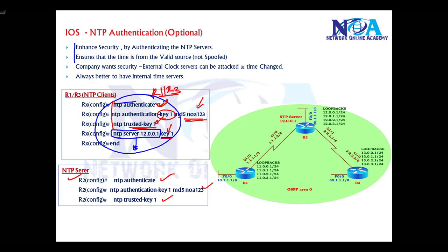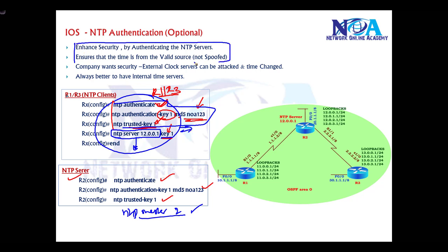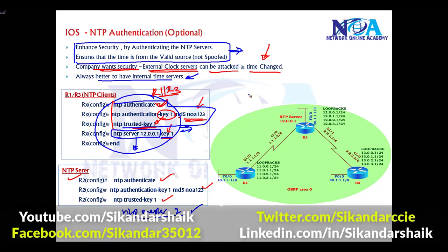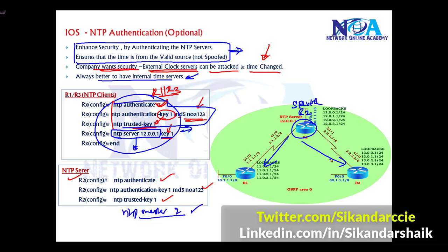These authentication commands need to be applied on clients R1 and R3, and the same three commands plus the NTP master command are configured on the server. It's always recommended to enable authentication to prevent unauthorized time servers. Most of the time we don't use external clocks because they can be compromised and we have no control over them. It's better to have internal time servers — in our case, Router 2 is the internal NTP server synchronizing time with Router 1 and Router 3.